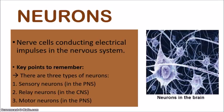Let's look at neurons. Neurons are specialized cells — nerve cells which conduct electrical impulses in the nervous system. Think of them as electrical wires sending messages to all parts of the body. There are three different types of neurons in the body: sensory neurons, which are found in the PNS (peripheral nervous system); relay neurons, which are found in the CNS (central nervous system); and motor neurons, which are also found in the PNS. We're going to look at these three neurons in great detail as we go on.